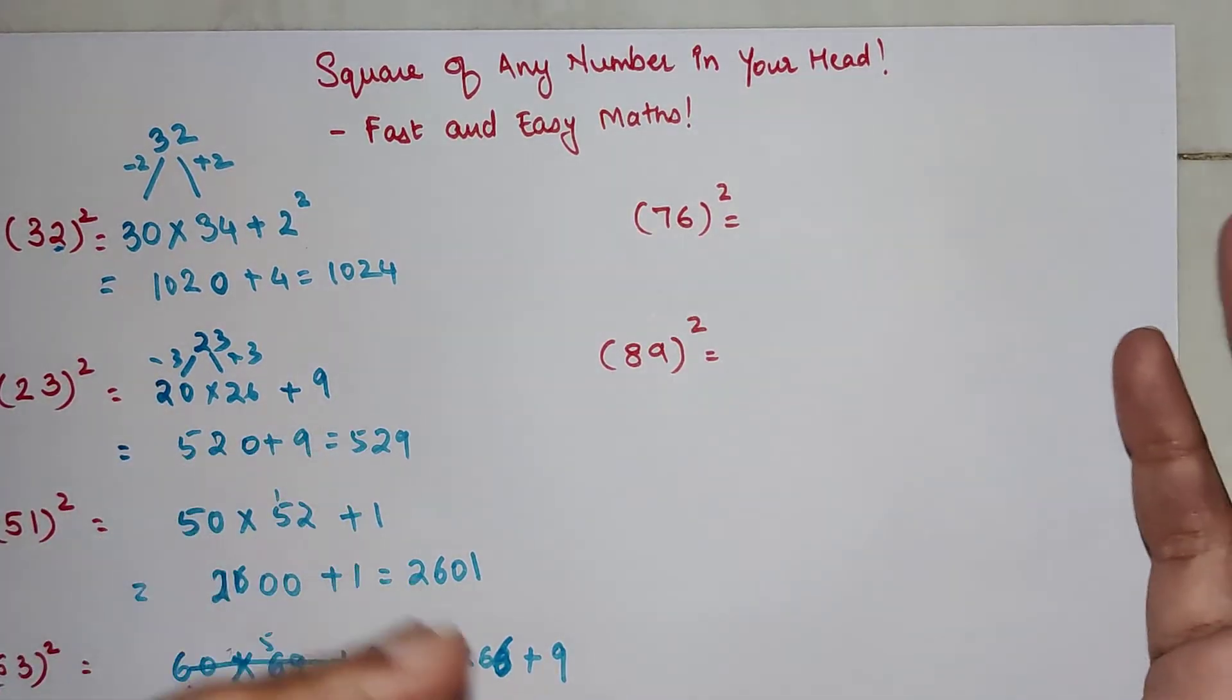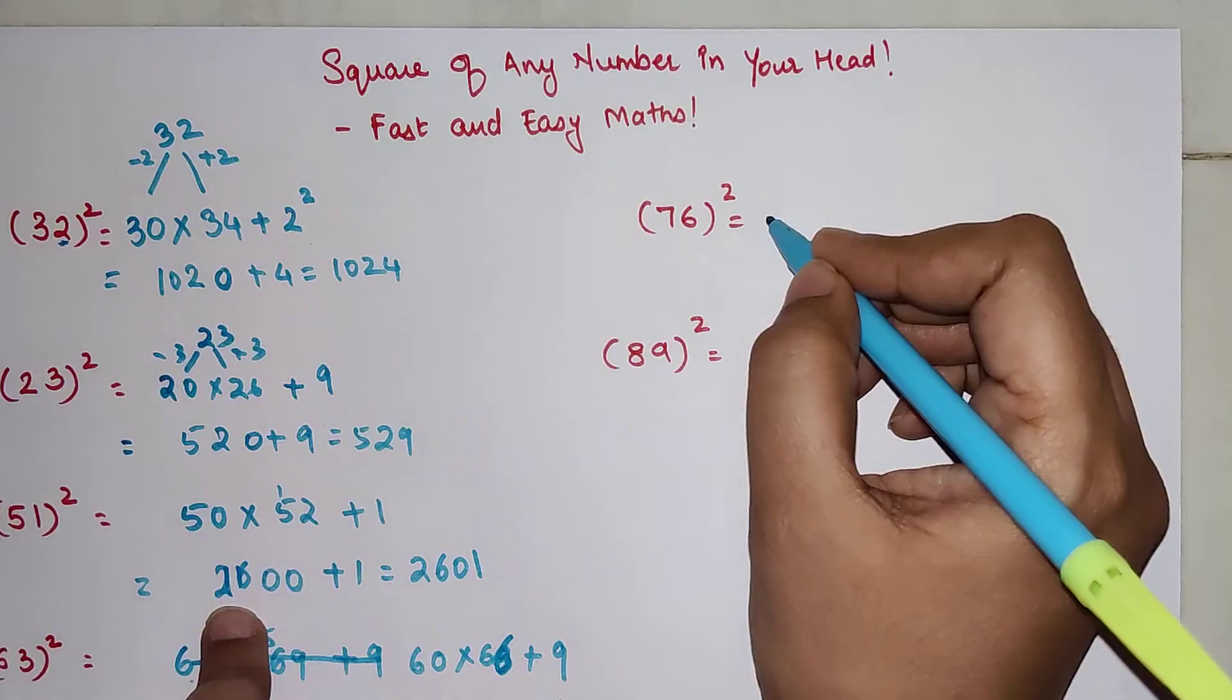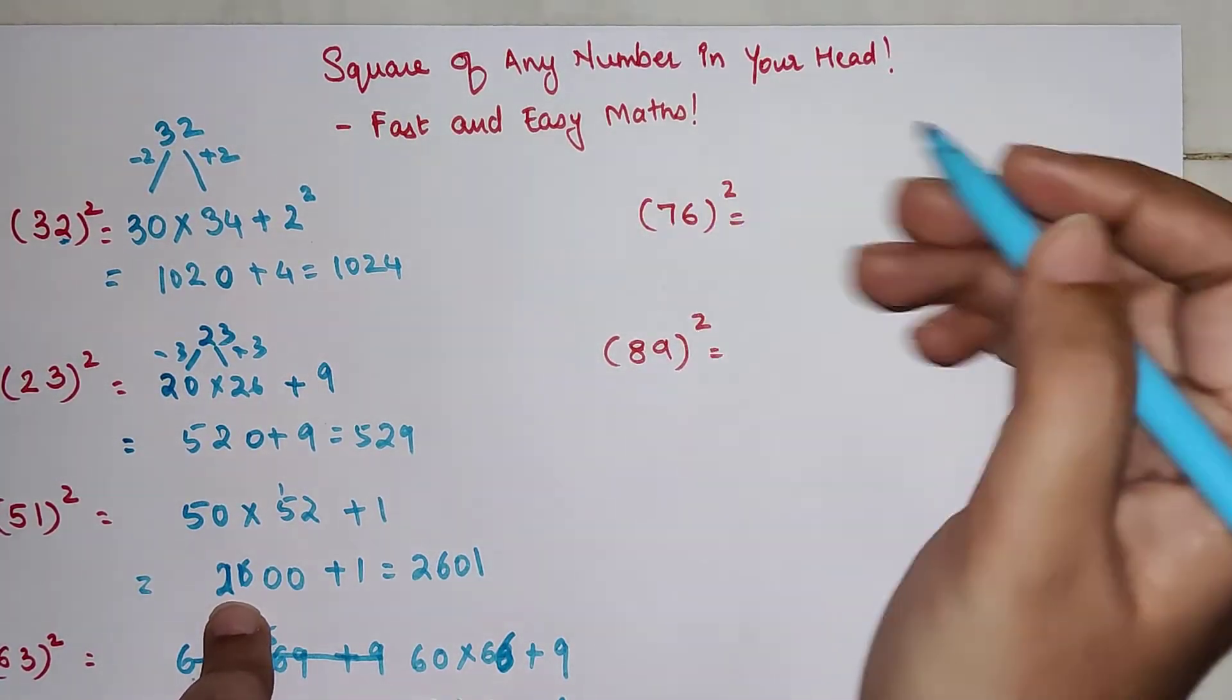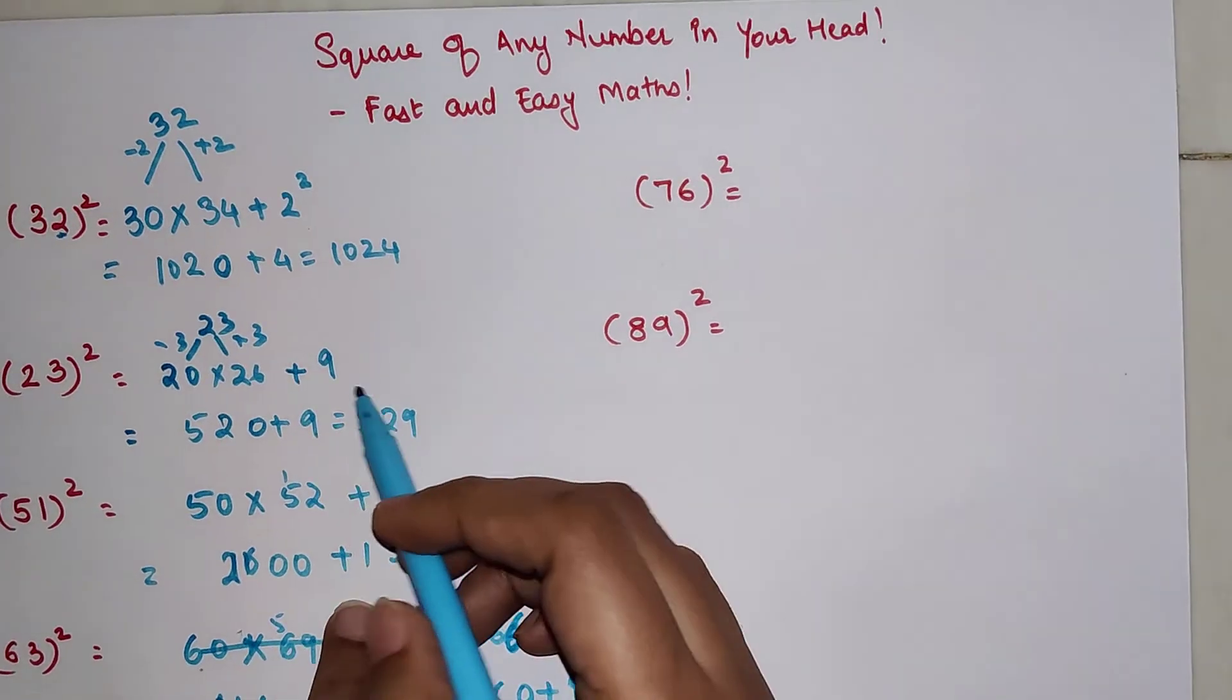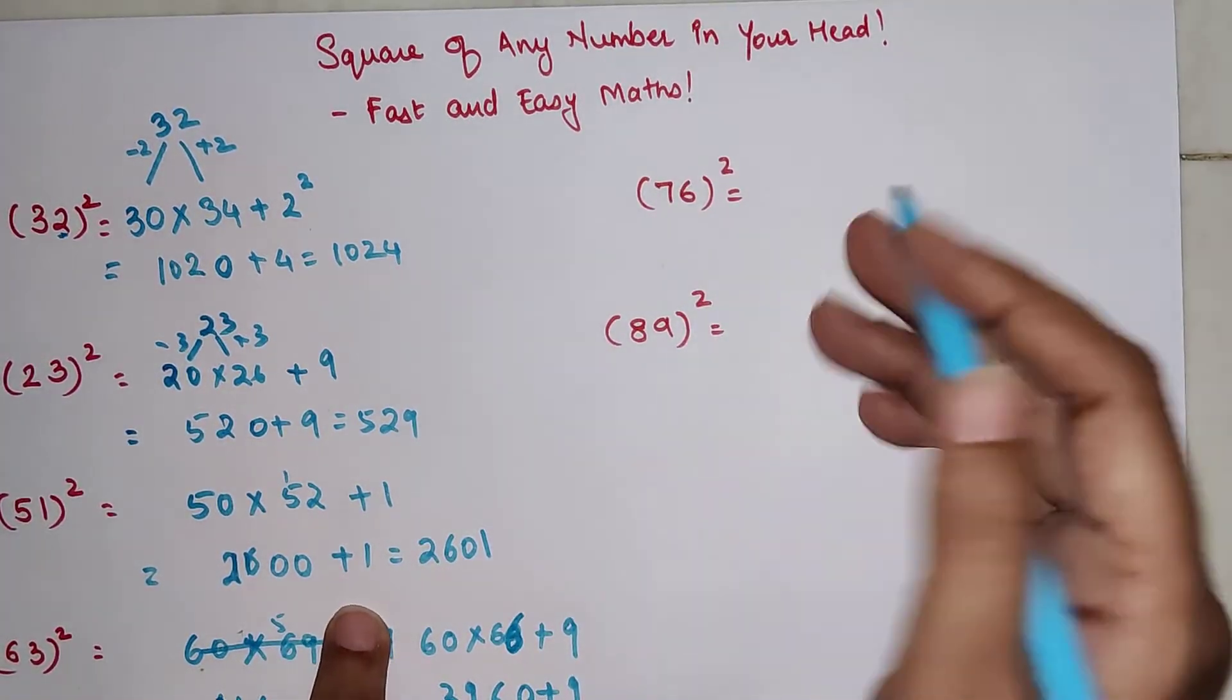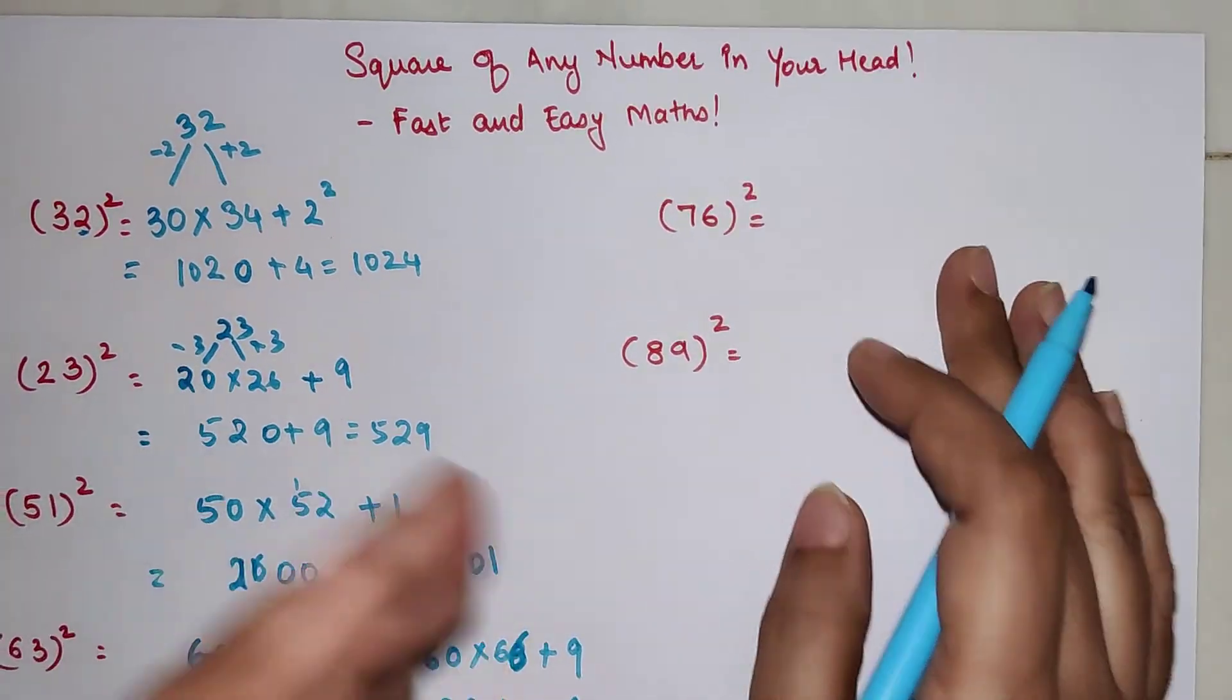Now, why don't we round it off to 80? Because 76 is very closer to 80. The reason for that is you can round it off, but in that case instead of adding the square everywhere like we've added, you'll have to subtract. The reason for that is very simple, but a lot of my students are very comfortable with adding. They're not very comfortable when it comes to subtraction.